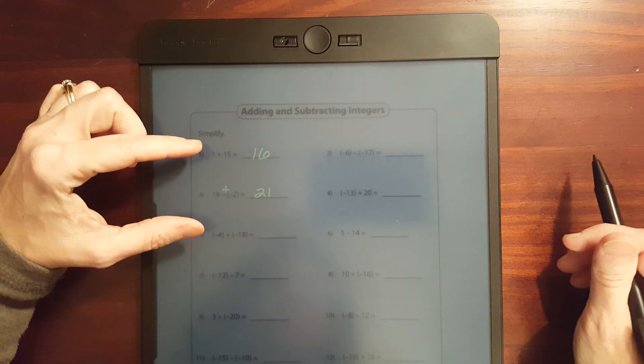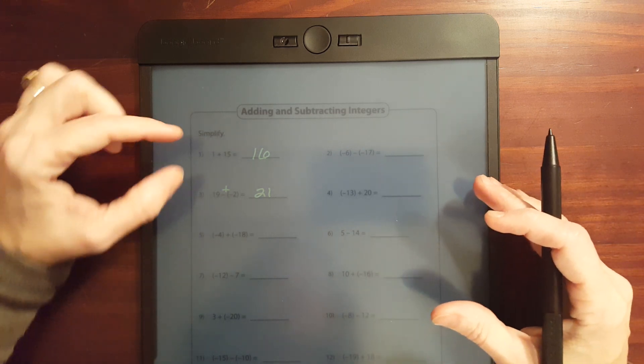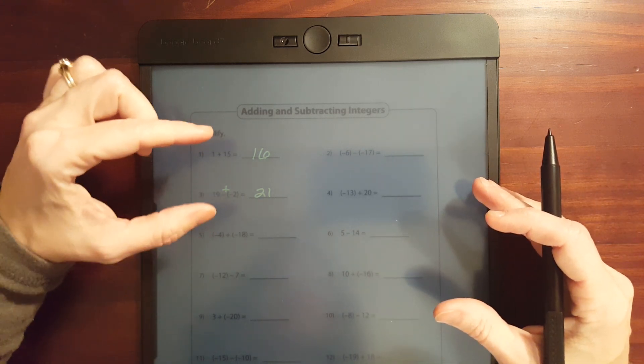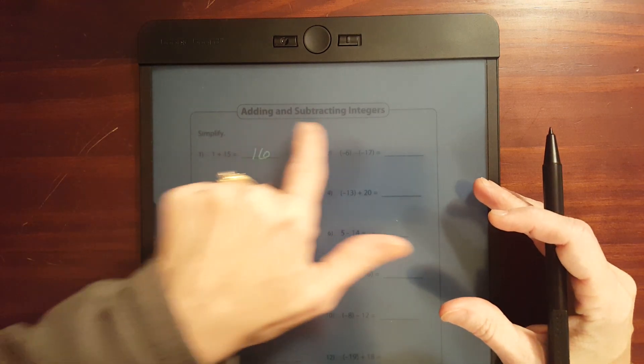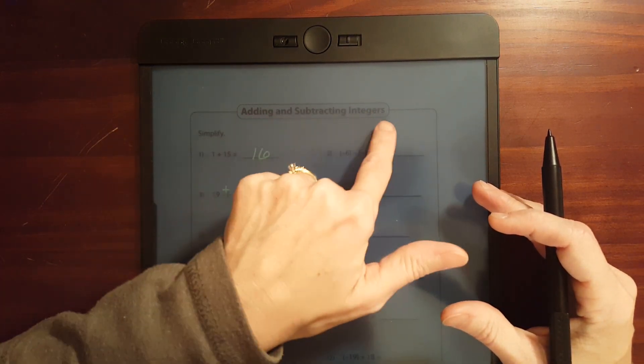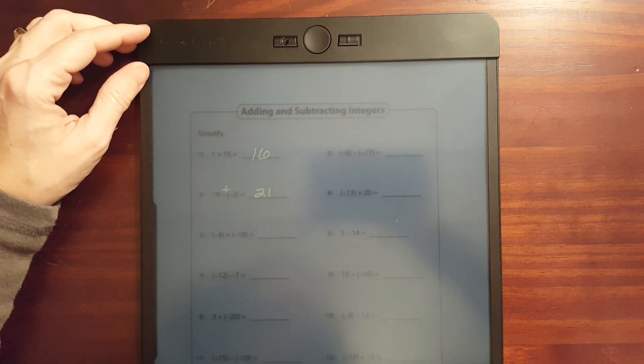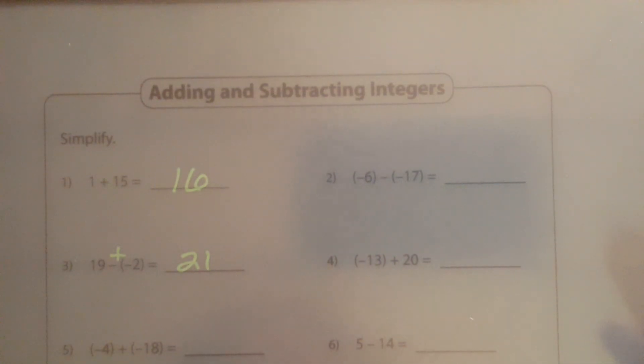Maybe for younger students, if you're printing out something that's a larger print, it would make it easier to see, like this right here. The adding and subtracting integers, you know, that's pretty easy to read.